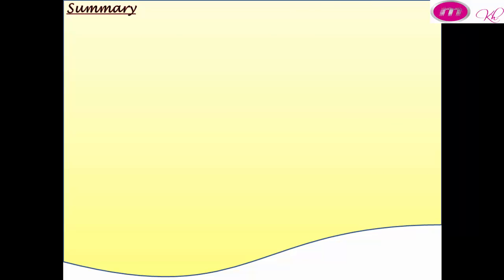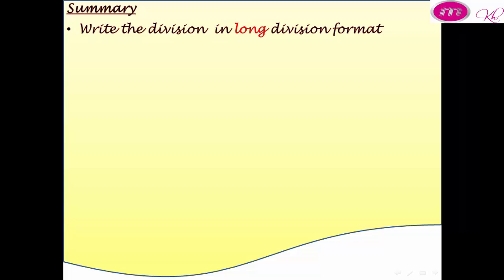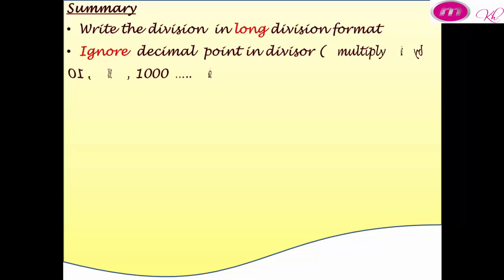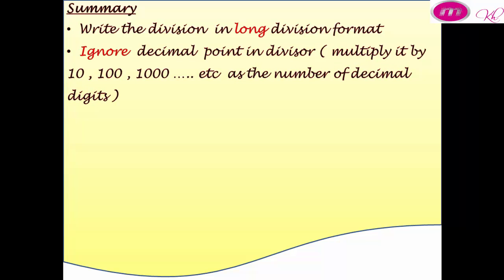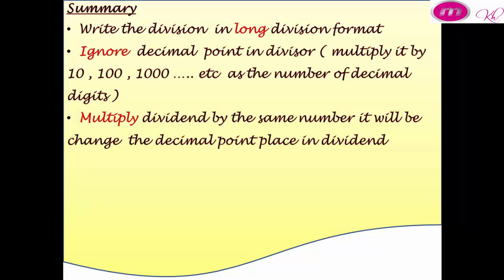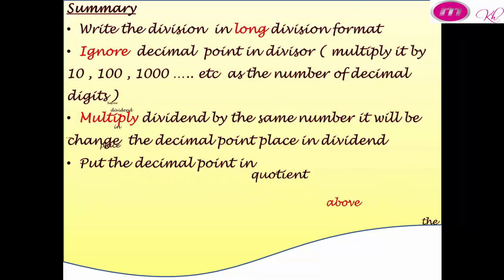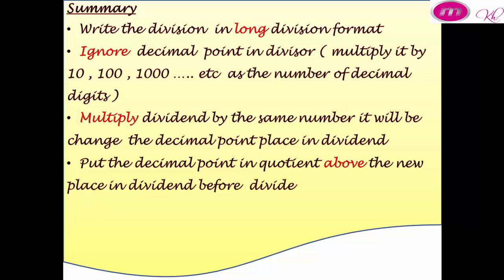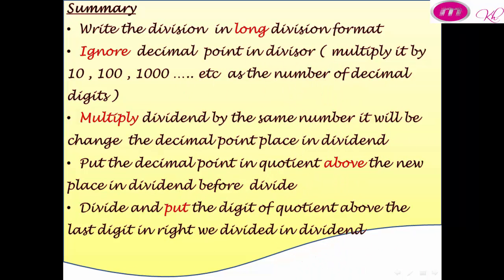In summary, when dividing by decimals: first, write the division in long format. Ignore the decimal point in the divisor and multiply it by 10, 100, or 1000 depending on the number of decimal digits. Multiply the dividend by the same number — this will change the decimal point place in the dividend. Before dividing, put the decimal point in the quotient above its new place in the dividend. Then divide and place each digit of the quotient above the last digit on the right that you divided in the dividend.